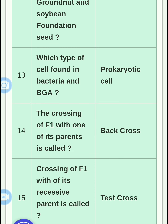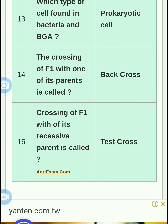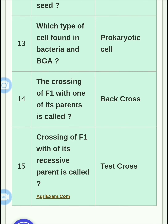The crossing of F1 with one of its parents is called a back cross. The crossing of F1 with its recessive parent is called a test cross. Remember: when we test, we use the recessive parent — that is the test cross. When we cross F1 with any parent, that is the back cross. This is a common confusion among students, so remember this clearly.